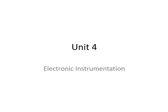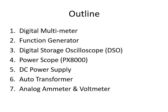Today we are going to cover unit number 4 of basic electronics engineering, that is electronic instrumentation. Unit 4 consists of the most important points: digital multimeter, function generator, digital storage oscilloscope, power scope, DC power supply, auto transformer, and the last one is analog ammeter and voltmeter.